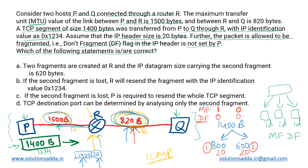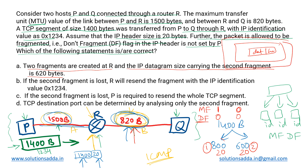Now let's evaluate the options. Option A states that two fragments are created at R and the IP datagram size carrying the second fragment is 620 bytes. This is true — the second fragment contains 600 bytes of data plus a 20-byte IP header, giving a total datagram size of 620 bytes. So option A is correct.